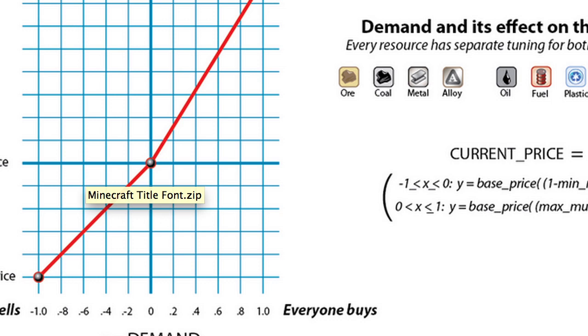So y-axis, up and down, that is the current price. And then x-axis, left to right, is the demand, which is total buys minus total sells over total transactions.